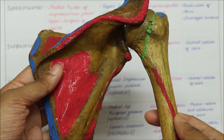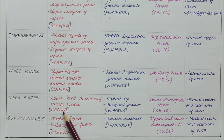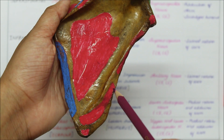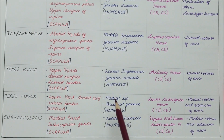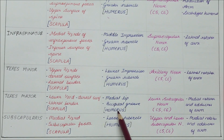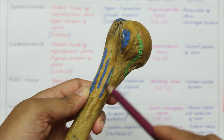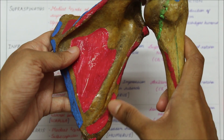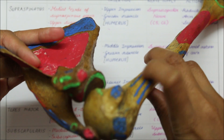Moving on to the next muscle, we have the teres major, which originates from the lower one-third of the dorsal surface of the lateral border of the scapula. We can remember the teres major as the parent of the minor. The teres major originates from the lower one-third of the dorsal surface of the lateral border of the scapula. Looking at its insertion, the teres major inserts into the medial lip of the bicipital groove of the humerus. This is the bicipital groove, and this is the medial lip where the teres major inserts. As a whole, it originates from the lower one-third of the dorsal surface of the lateral border of the scapula right here, and inserts right here into the medial lip of the bicipital groove.